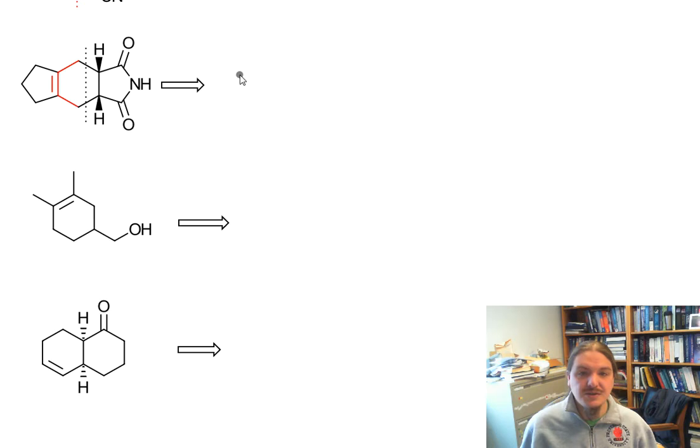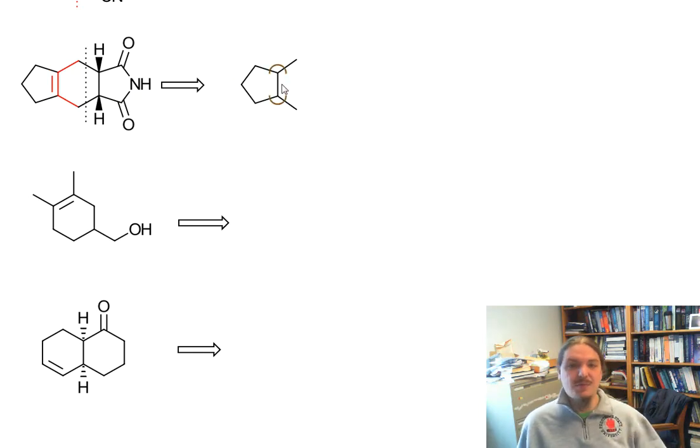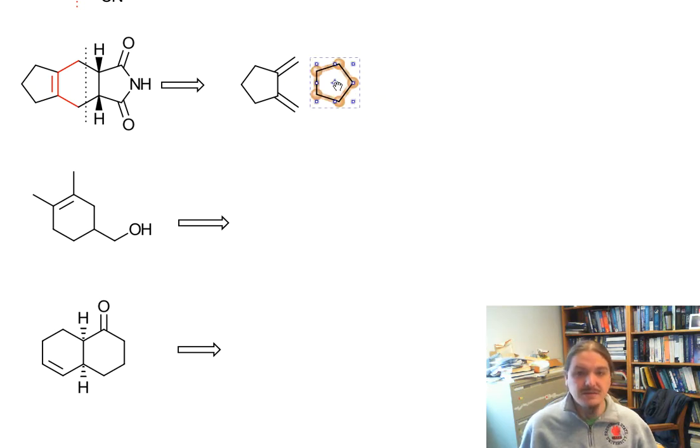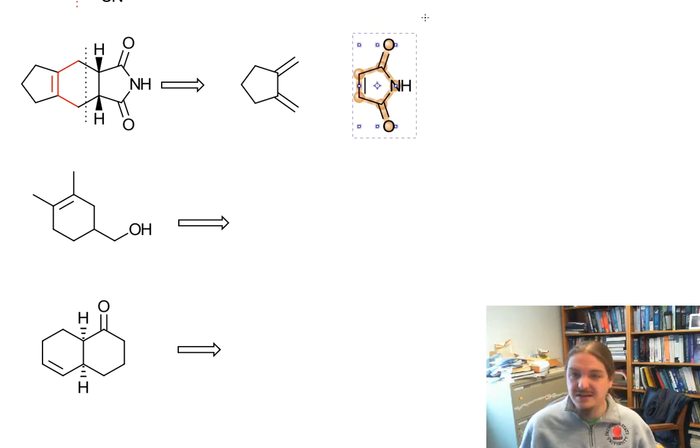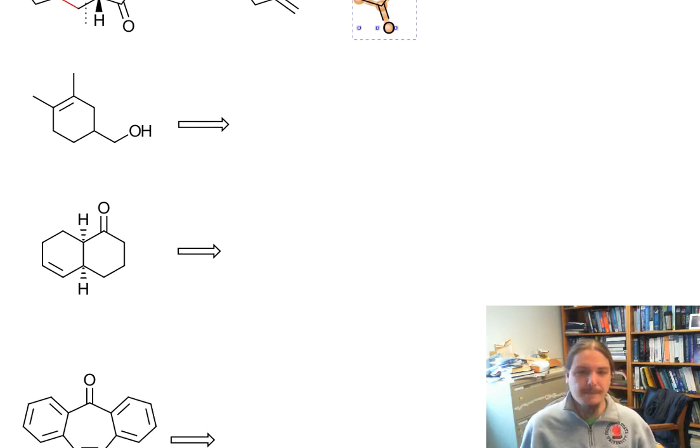Now we can use that information to draw the diene and the dienophile. First, we're going to draw everything that's on the left of that line the way that it is. Instead of drawing the double bond in the middle of the diene, we draw two double bonds on the outside. Then we're going to draw everything that we see on the right of that dotted line, and we're going to draw it the way that it appears. This becomes the dienophile. I didn't address the stereochemistry here, but because we have a cyclic dienophile, that leads to this trans arrangement naturally.